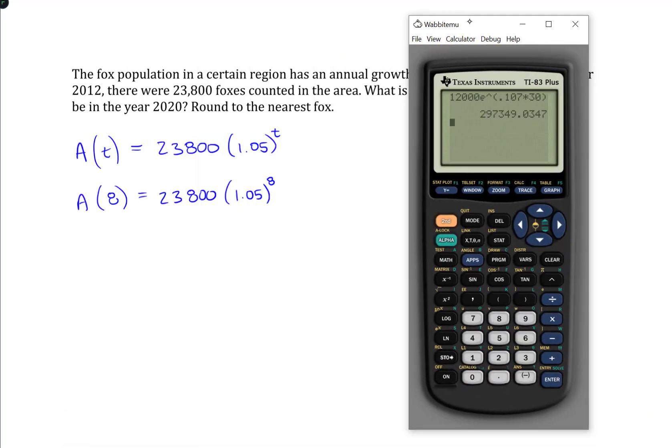So, what that gives us is this. 23,800 times 1.05 raised to the 8th, which is 35,163.